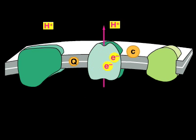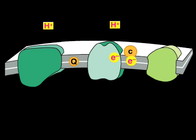The complex again pumps protons as electrons flow through it. Because each complex in the chain has a higher affinity for the electrons than the previous one, the electrons keep moving through the chain unidirectionally.